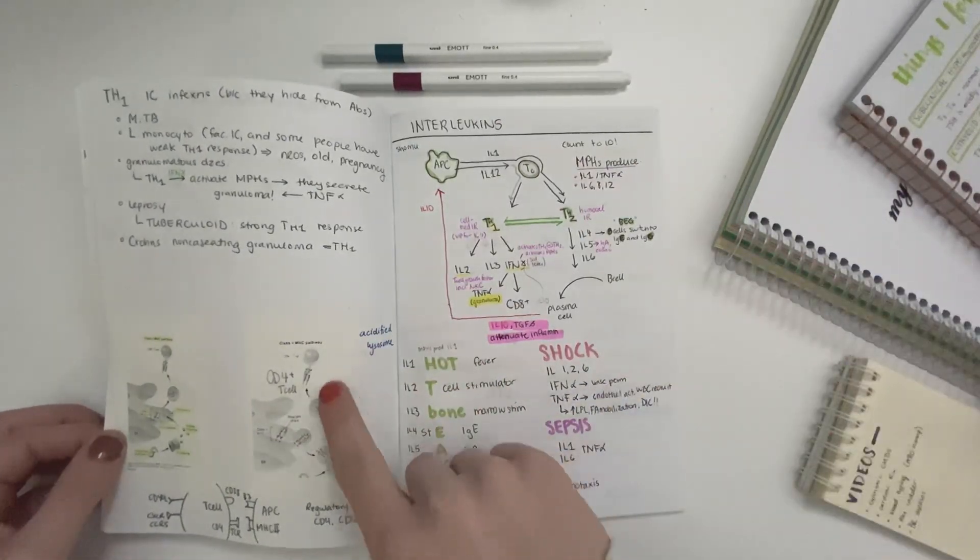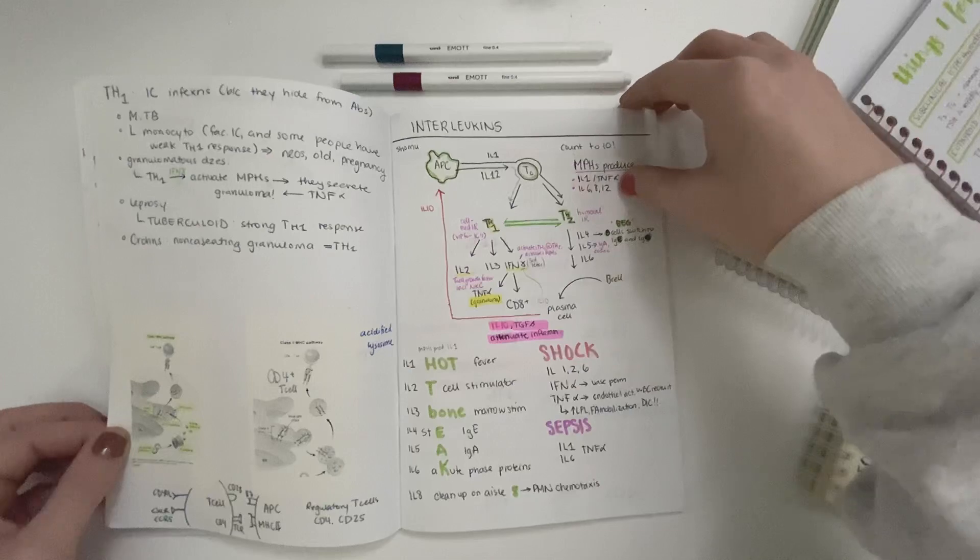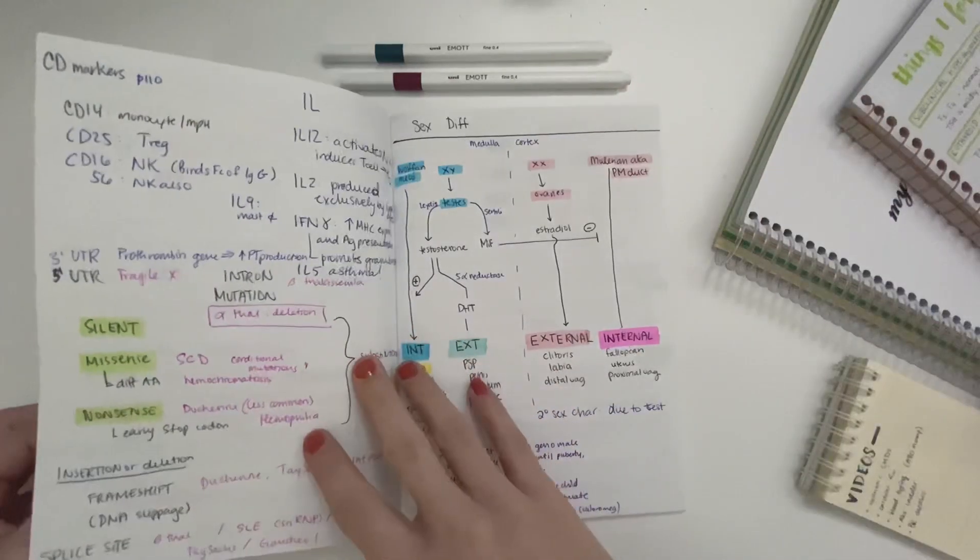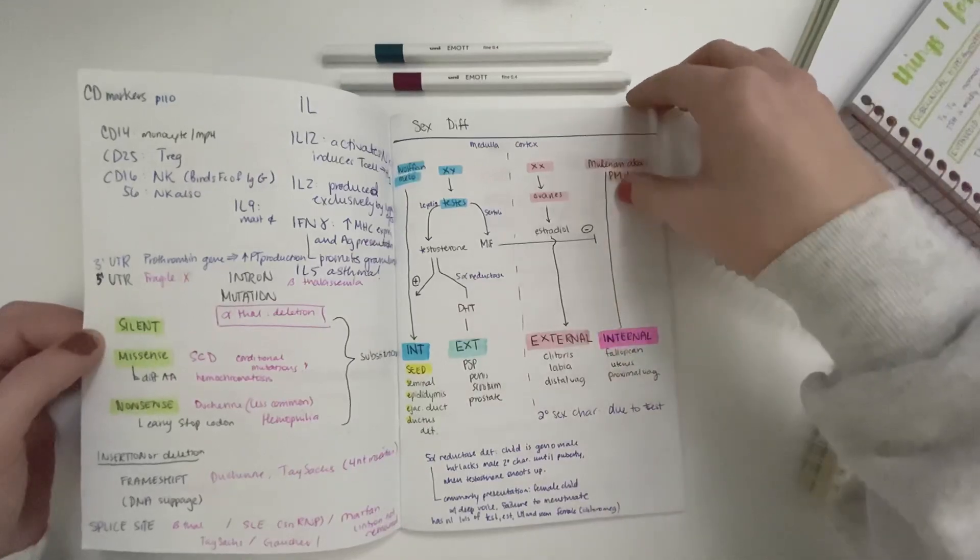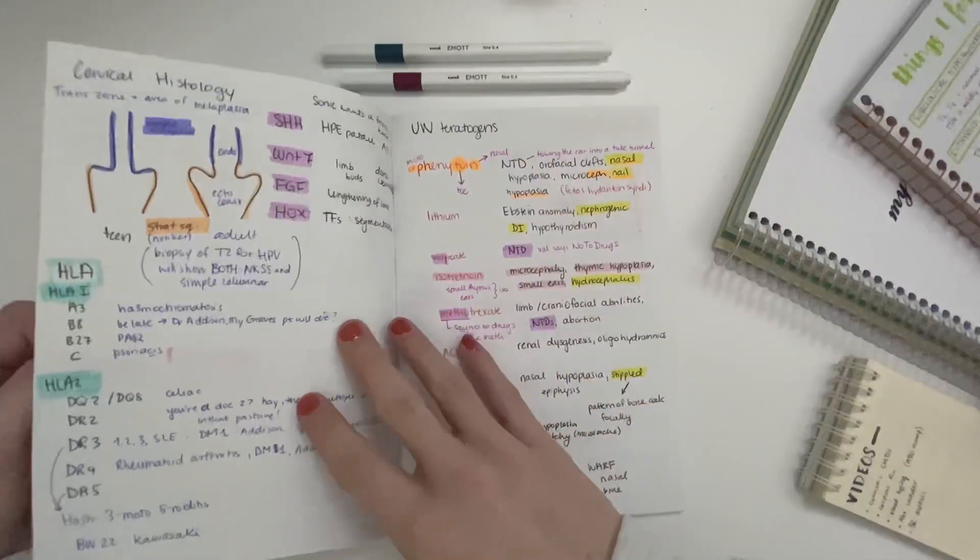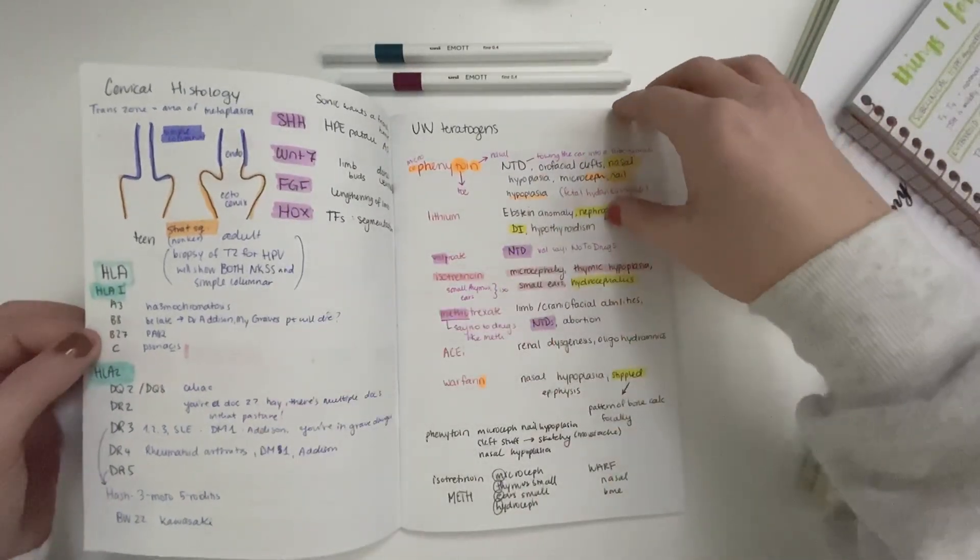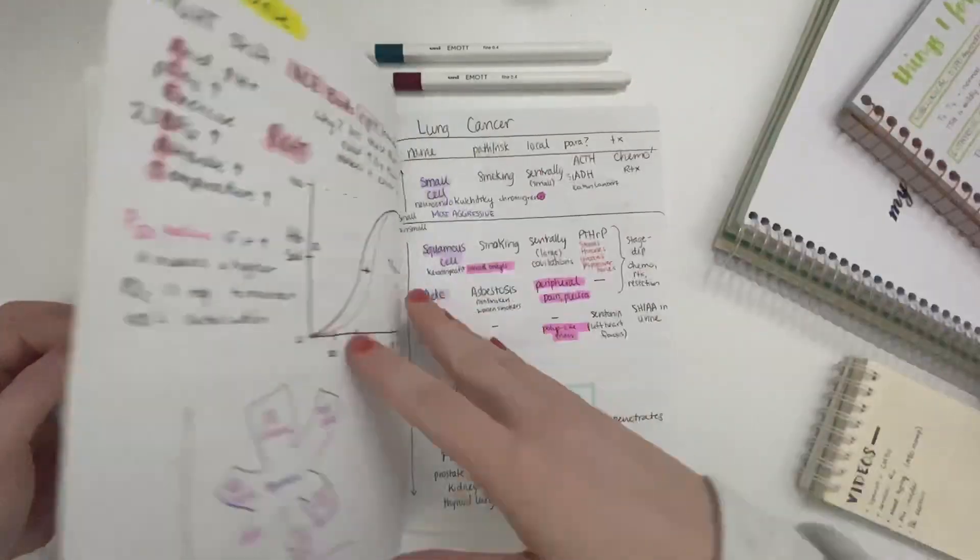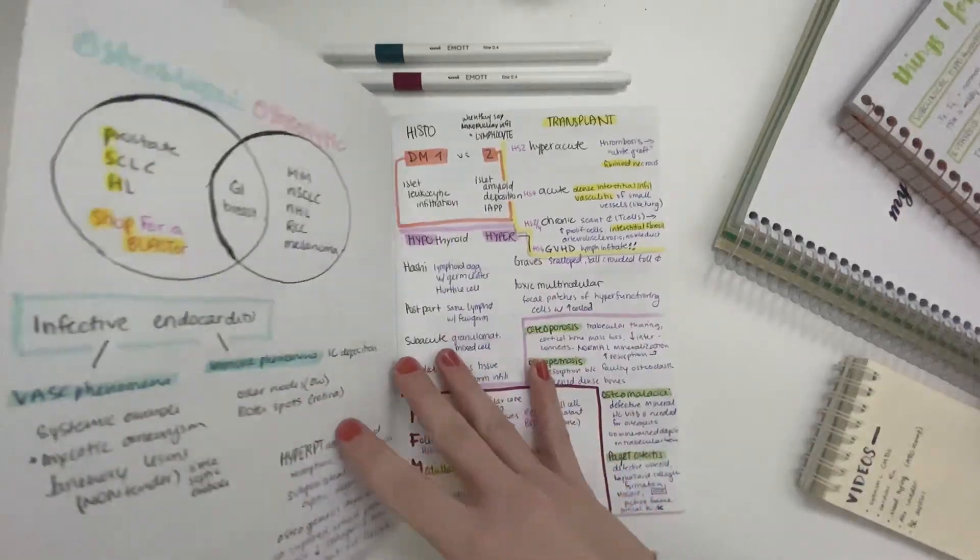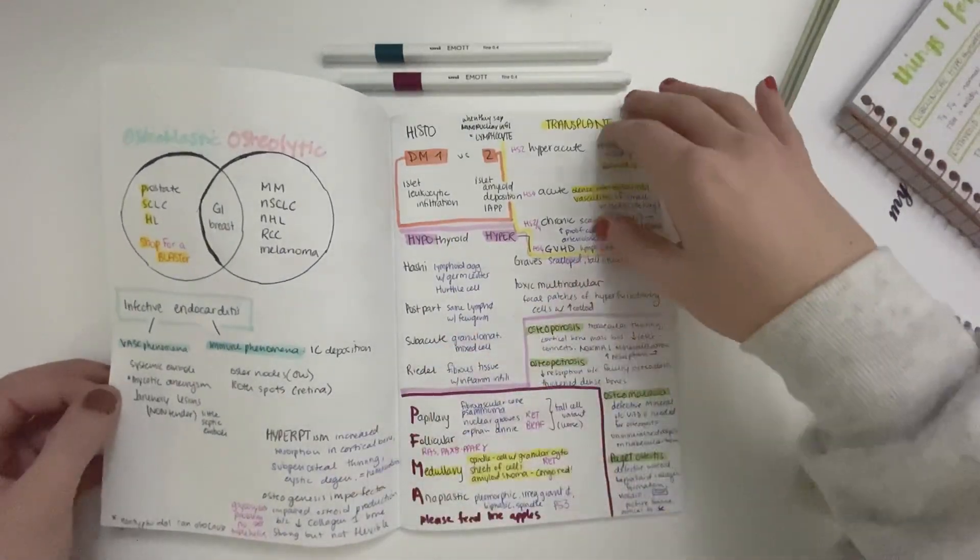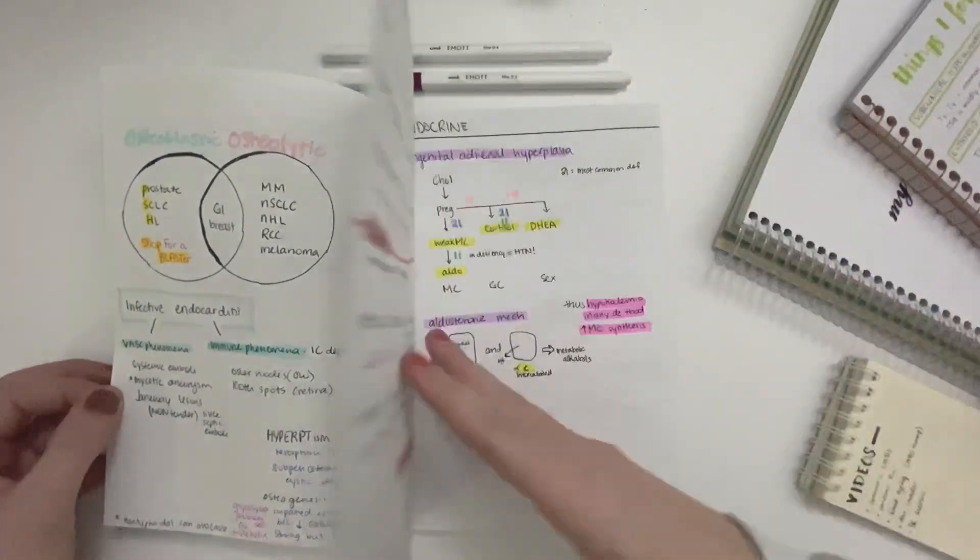The thing about studying for the USMLE is that you start to notice patterns. The more questions you do and the more question banks you go through, you start to realize that they ask very similar questions. Then when you do NBMEs, those same concepts come up again and again. These were the kind of things that I decided to jot down in this notebook, things that I knew would be asked and that I would want to make sure that I reviewed right before the exam.